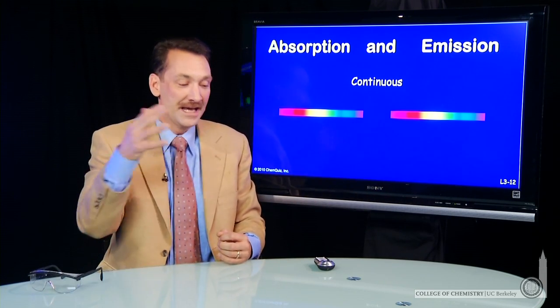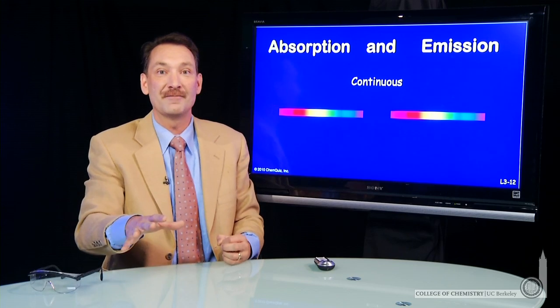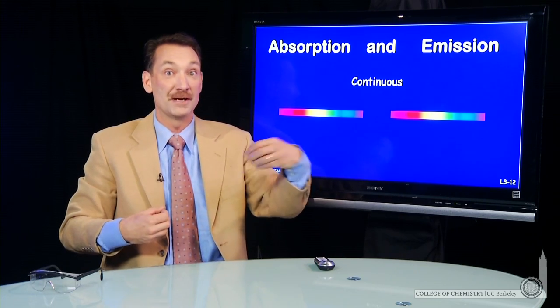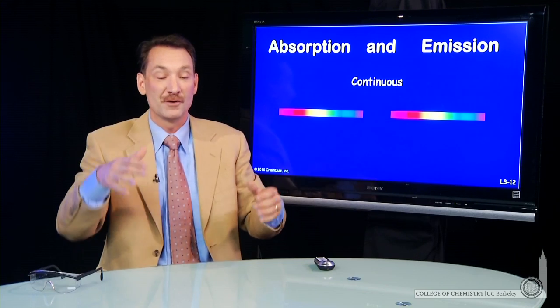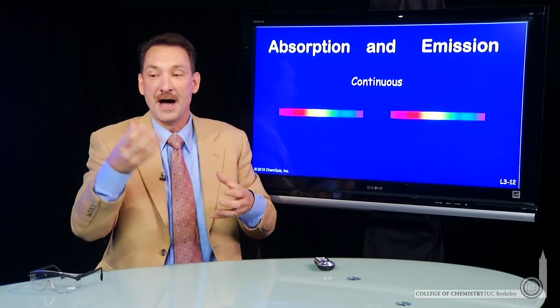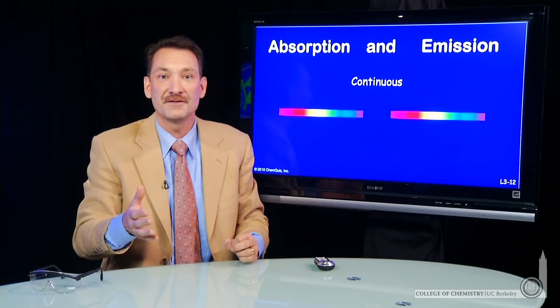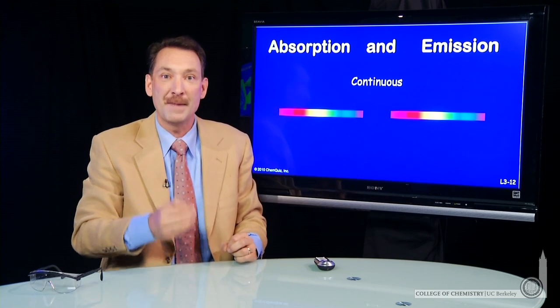So when radiation hits a molecule or atom or any kind of matter, many things can happen. It can be absorbed. Radiation can be emitted by excited atoms. The radiation can change from high frequency to low frequency. There can be a reflection process. All kinds of different things that help us understand the matter.